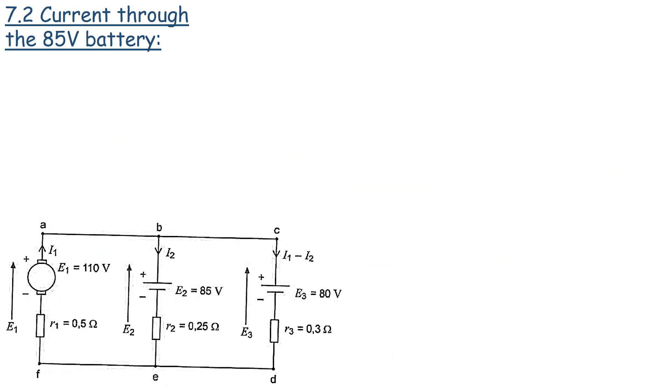Right, now in the next step we are going to substitute I2 into equation number one. Okay, so let's write down equation one. Equation one, let me make a note there. It's equation one. 25 is equal to 0.5 I1 plus 0.25 I2.